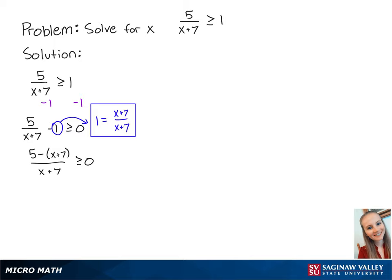Simplifying the fraction on the left side, we get negative 2 minus x over x plus 7, which is greater than or equal to 0.